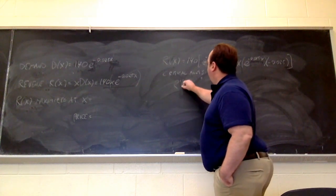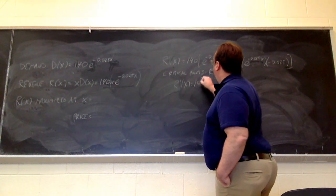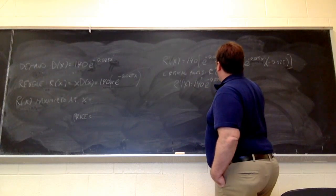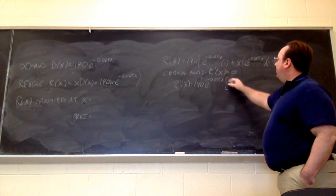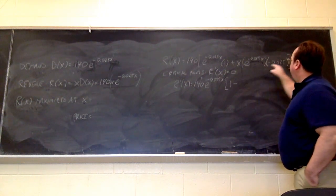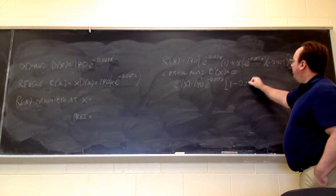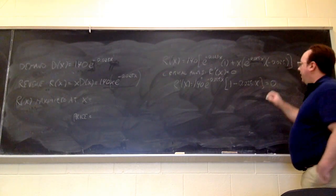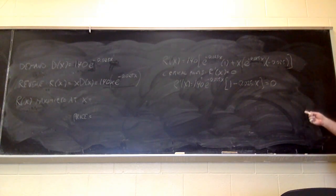So, r prime of x is equal to 140, e to the minus 0.025x. And then what's left here is just 1, and then over here I have minus 0.025x, and so this whole thing is going to be equal to 0.